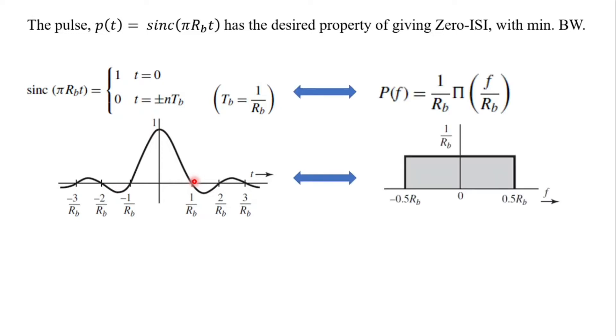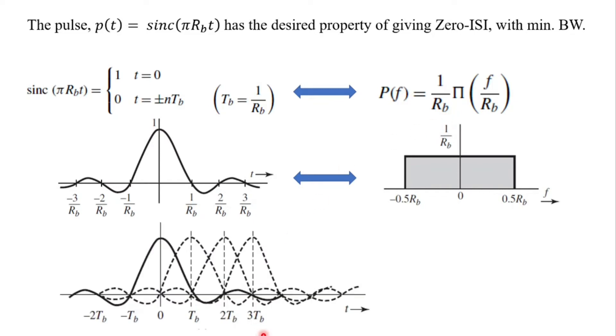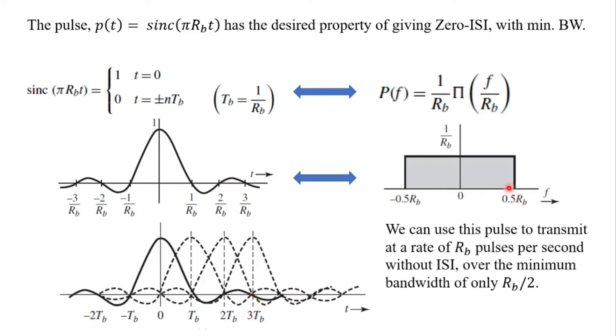Now if we take the Fourier transform of this sinc function we obtain a rectangular function in the frequency domain. So sinc function enables us to send multiple pulses Rb pulses per second and at sampling instance we will have 0 ISI also the minimum bandwidth of Rb by 2 is achieved. That is over here if we have a bandwidth of 1 hertz so we can send two bits, two binary bits.